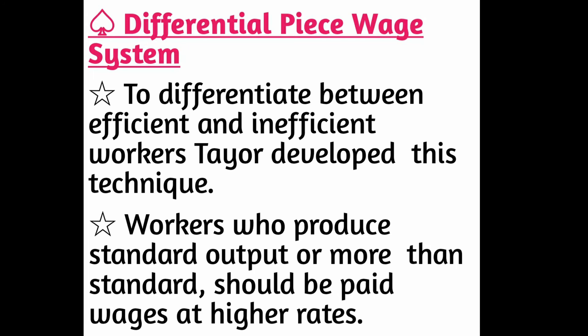Standard time taken by a worker to make one cardboard box is 20 minutes, so in one hour he produces 3 boxes. Assuming a daily shift of 8 hours, with 1 hour deducted for lunch and rest, he works 7 hours per day and produces 21 boxes. So the standard output for a worker is set at 21 boxes per day.